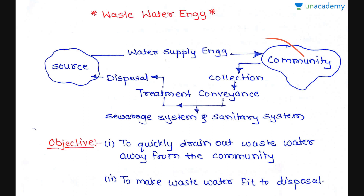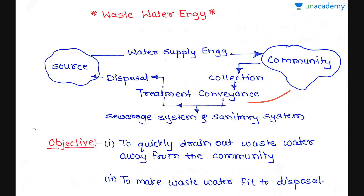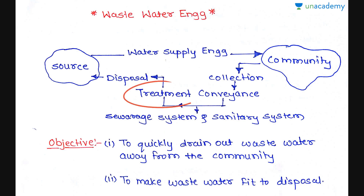When the community uses the water, about 70 to 80 percent of the water supplied is generally converted into wastewater or sewage. That water is first collected, then conveyed through sewers — sewers are conduits which convey wastewater. The pipe network which carries this wastewater is known as the sewerage system.